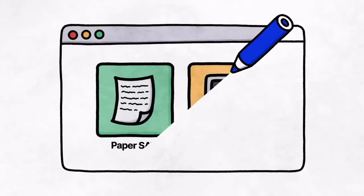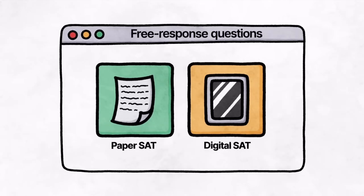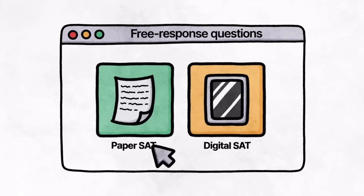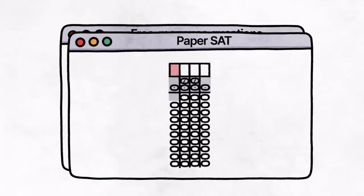Another interesting change to the math section applies to free response questions, or FRQs. Originally, when the test was paper-based using bubble sheets, the slots were limited to four bubbles with no positive or negative signs.